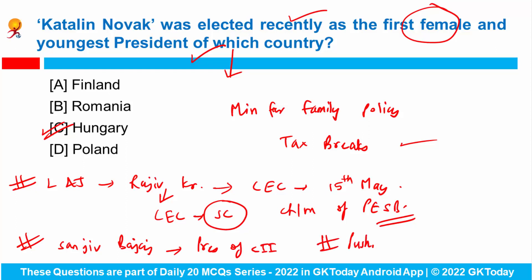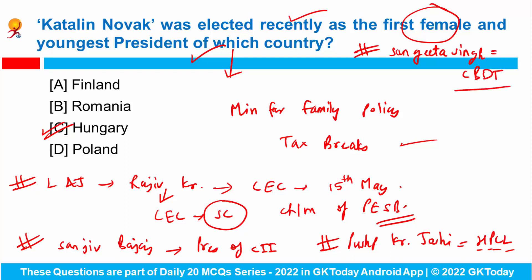Pushp Kumar Joshi has been appointed as Chairman and MD of HPCL, that is Hindustan Petroleum Corporation Limited. And Sangeeta Singh has been appointed as the Chairman of the Central Board of Direct Taxes.